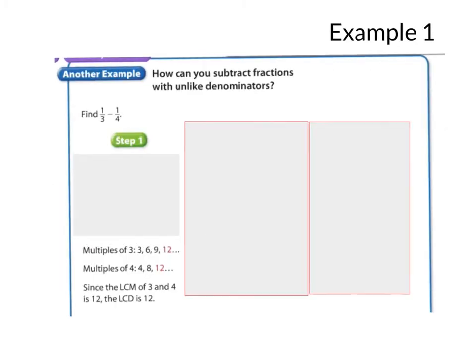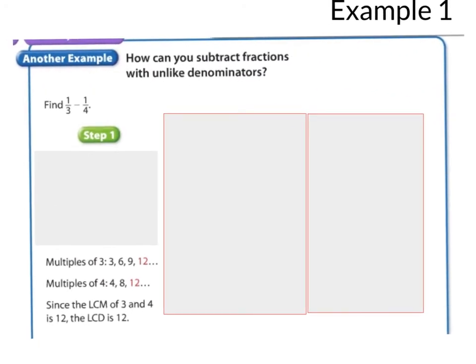Alright, so here's example one, and we're specifically subtracting here. How can you subtract fractions with unlike denominators? Find one-third minus one-fourth. I circled it because you need to write that down. So, we know that our previous lesson, we did LCM, and we know that we're going to use that skill to find the least common multiple of three and four so that we can make the denominators like denominators instead of unlike.